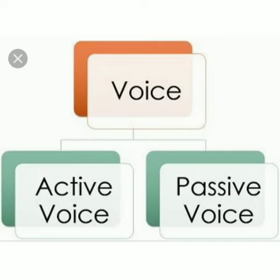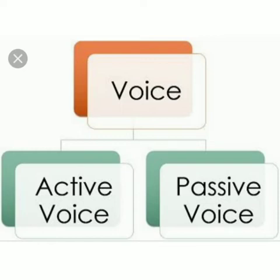In a transitive verb — a verb which has an object — there are always two voices: active voice and passive voice. A verb is in active voice when its form shows that the person or thing denoted by the subject is doing something, that is, the doer of an action. For example, 'The hunter shoots the tiger.' Here the hunter is doing the shooting, so this sentence is in active voice.